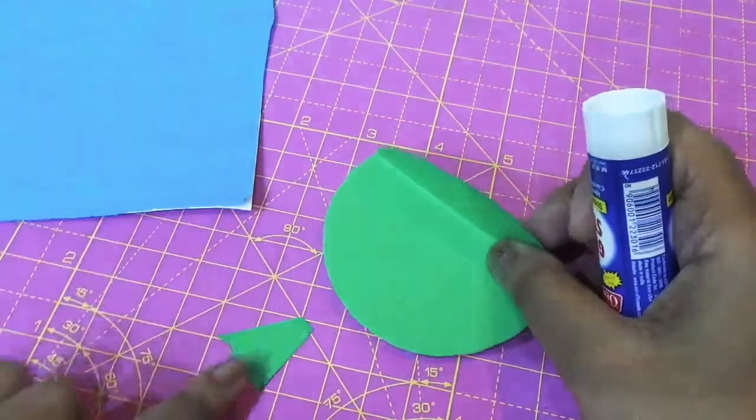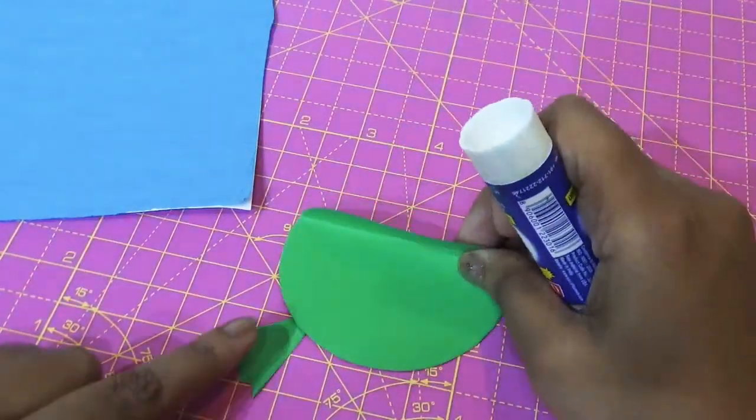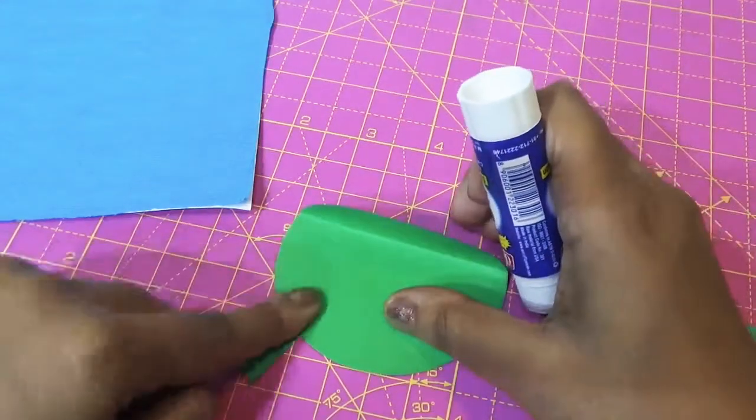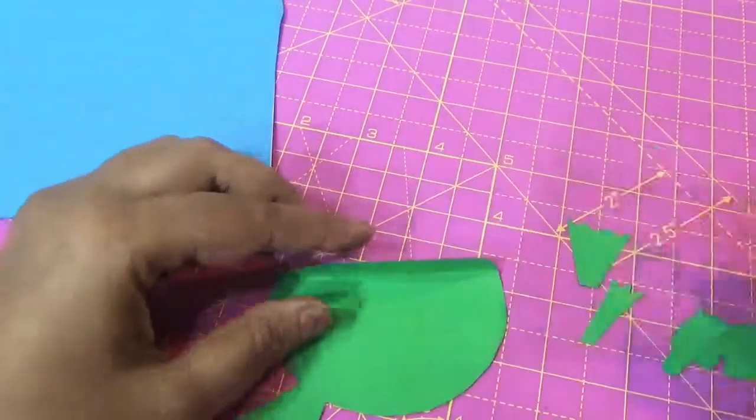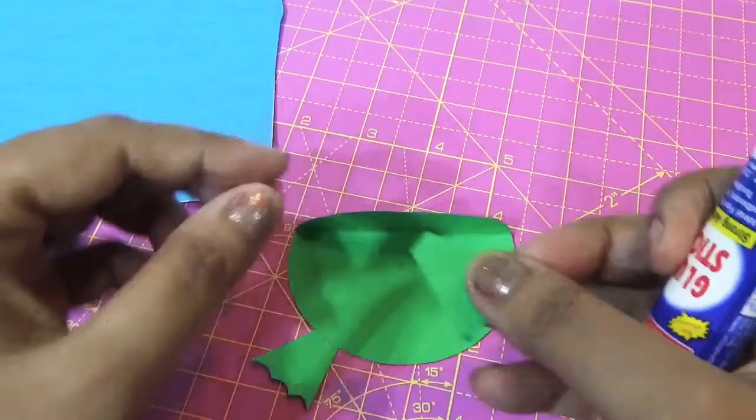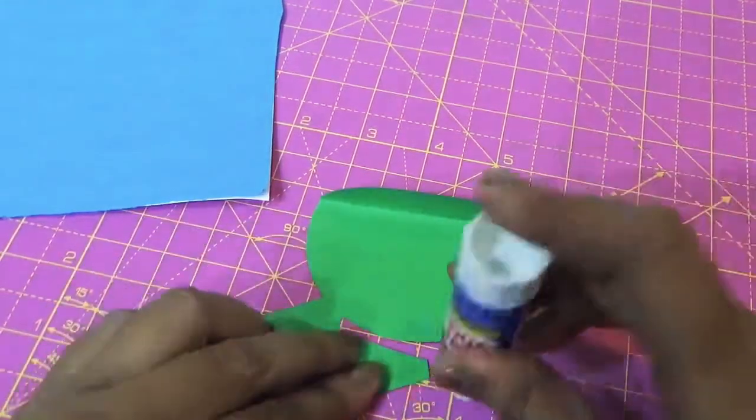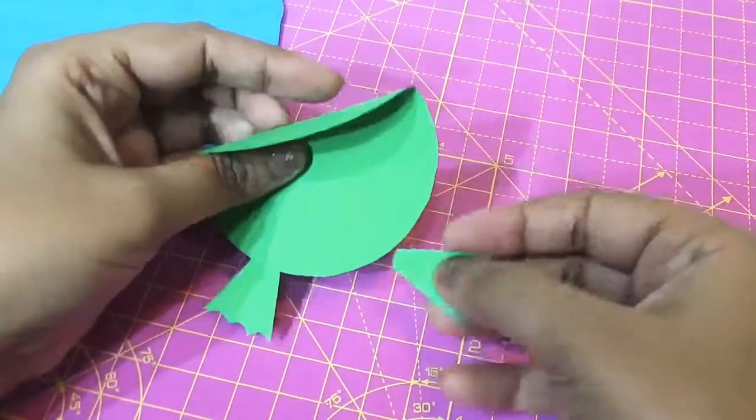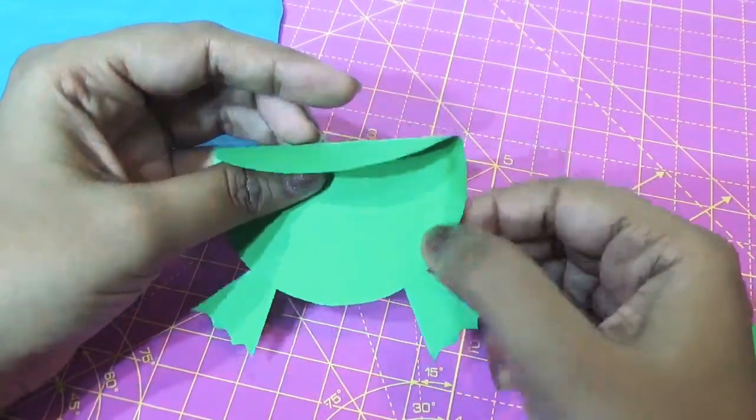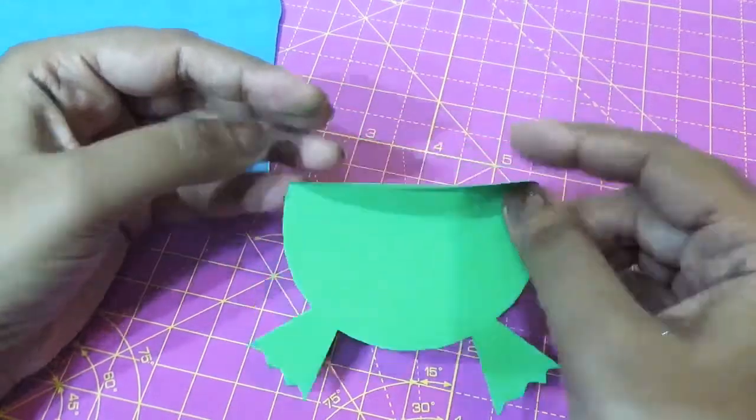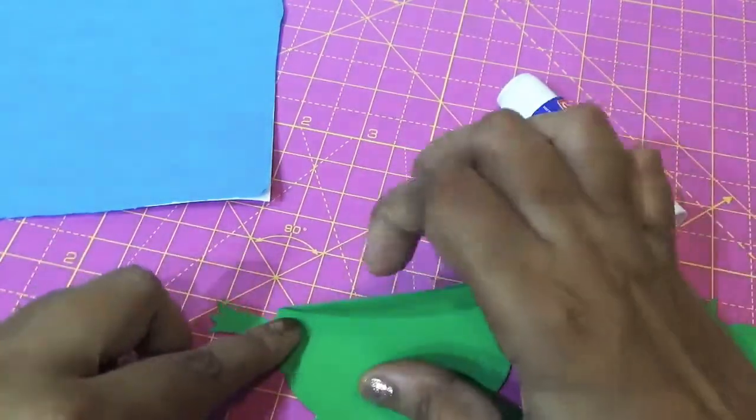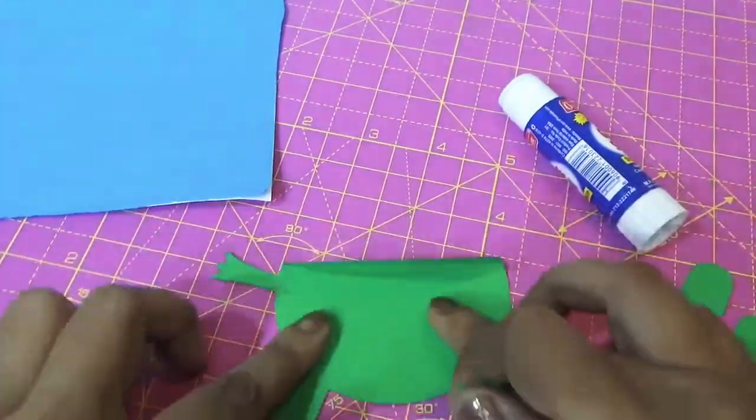Now I will stick the leg as I am demonstrating with this glue stick. See, it will look like that when we put the leg. Now I will attach the frog's hand.